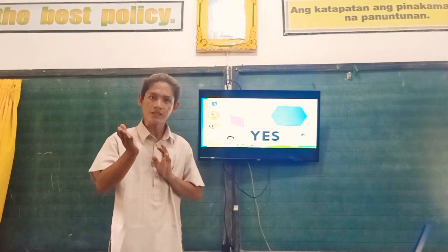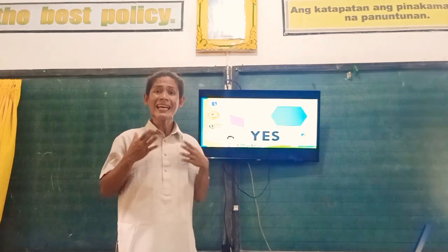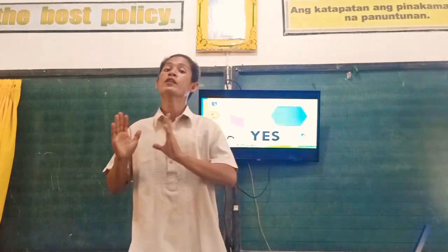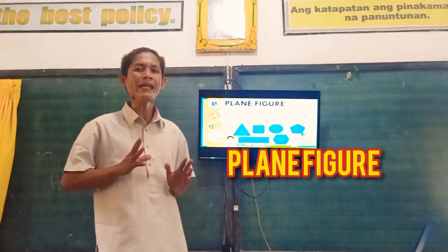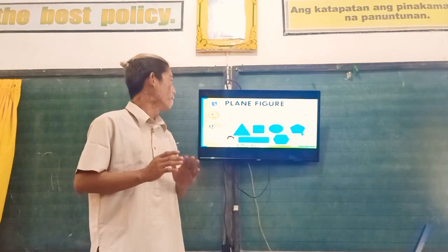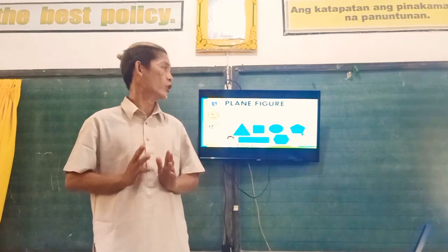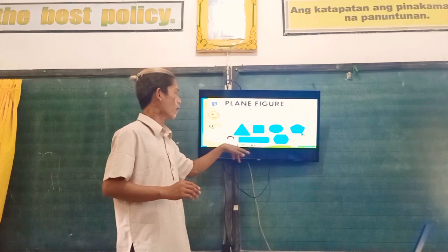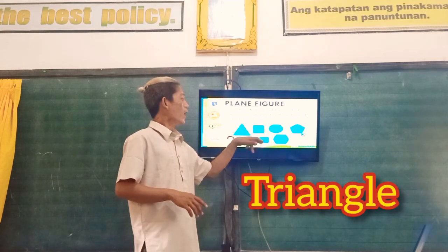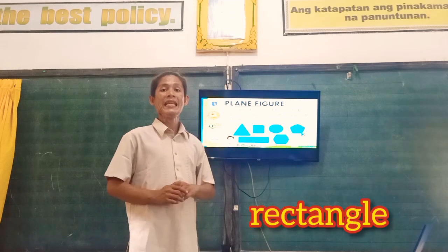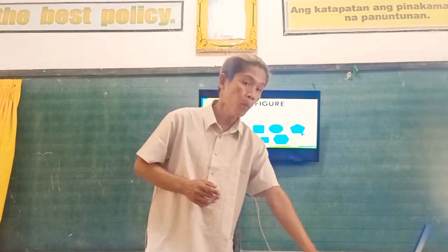So today, let us proceed to our lesson about differentiating plane figures from solid figures. What is a plane figure? When we talk about plane figures, it is a two-dimensional figure which possesses an area. Examples of plane figures include triangles, square, circle, oblong, pentagon, rectangle, hexagon, and so on.